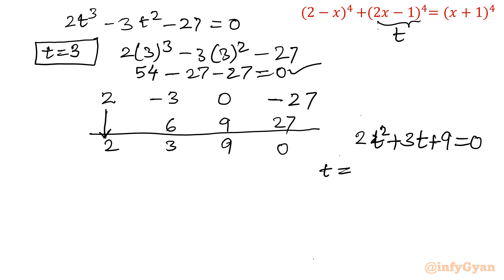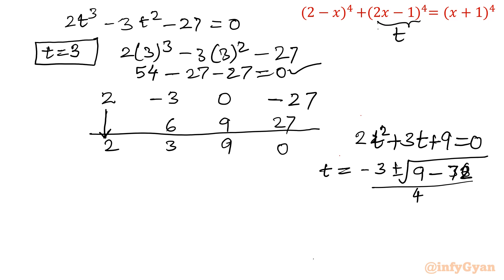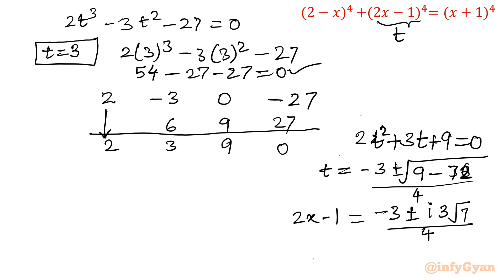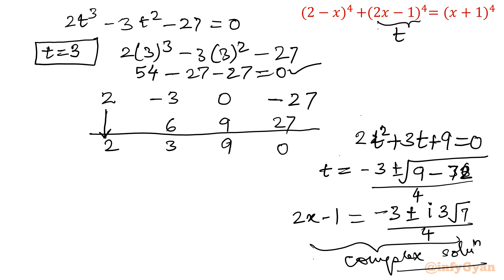Let us find the values of t from 2t² plus 3t plus 9 equal to 0 using the quadratic formula: t equals minus b plus or minus root(b² minus 4ac) over 2a, which gives minus 3 plus or minus root(9 minus 72) over 4. Since 4ac is 72, we have root(9 minus 72) equals root(minus 63), which is a negative number inside the square root. So this gives complex solutions: t equals minus 3 plus or minus i times 3√7, all over 4. These are complex solutions, so they are either rejected or noted as complex.